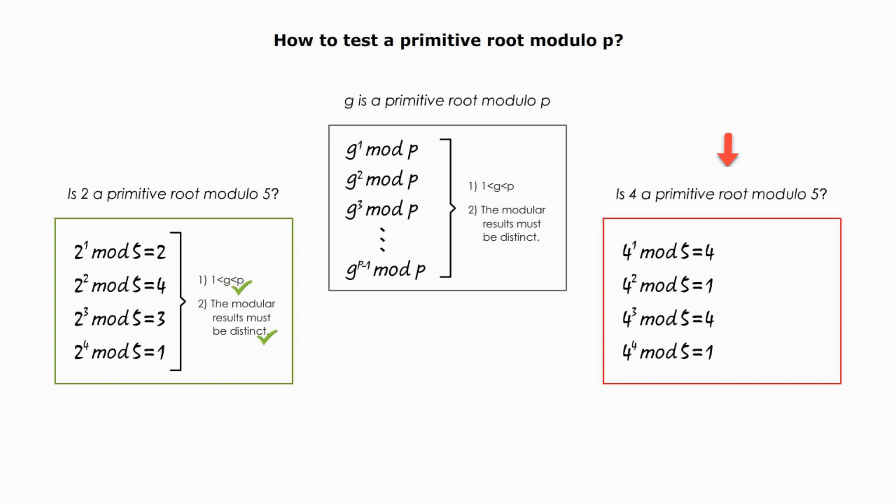The first condition is good, but the second condition is not good. Thus, 4 is not a primitive root modular 5. You can imagine if p is a very large prime number.